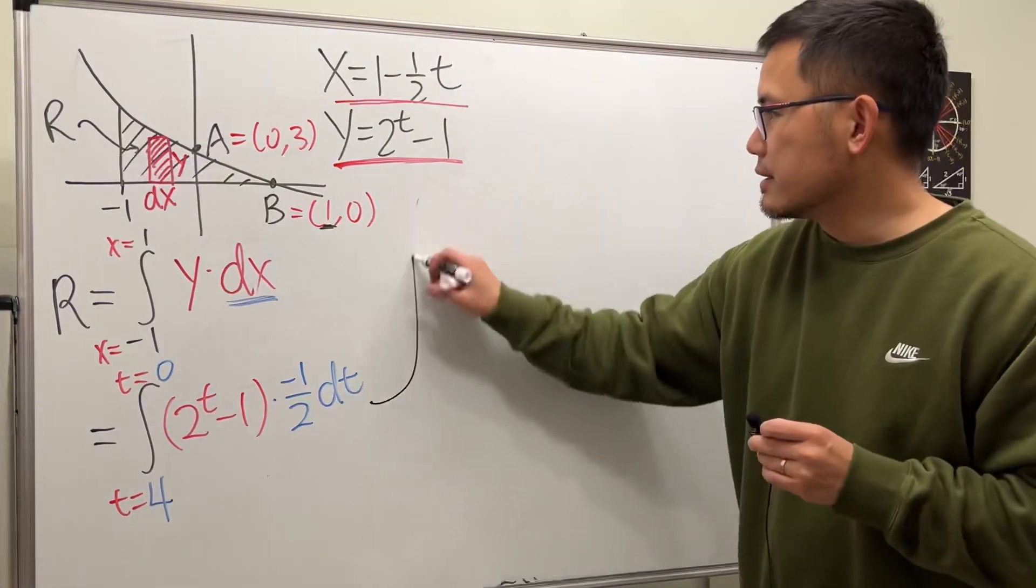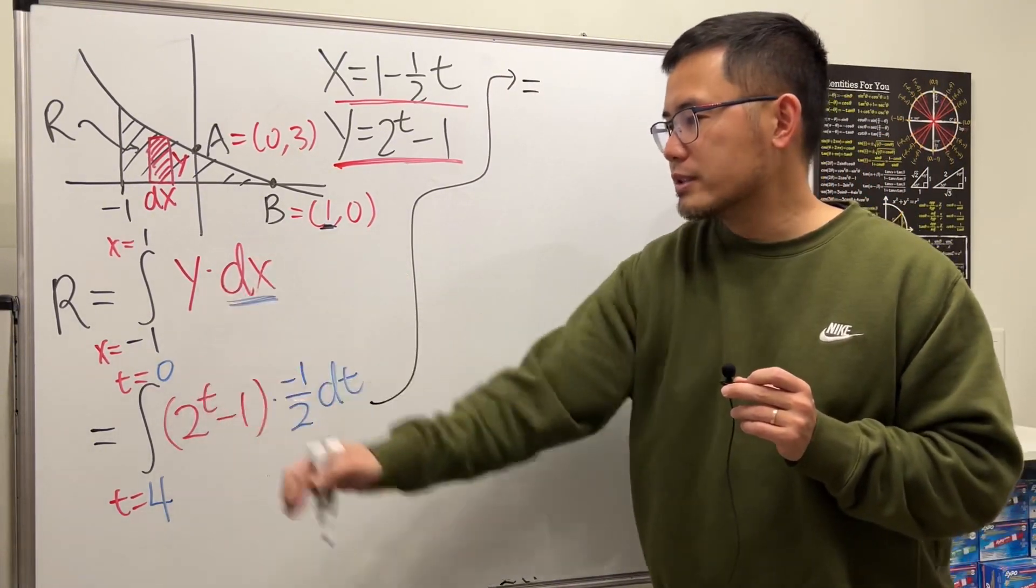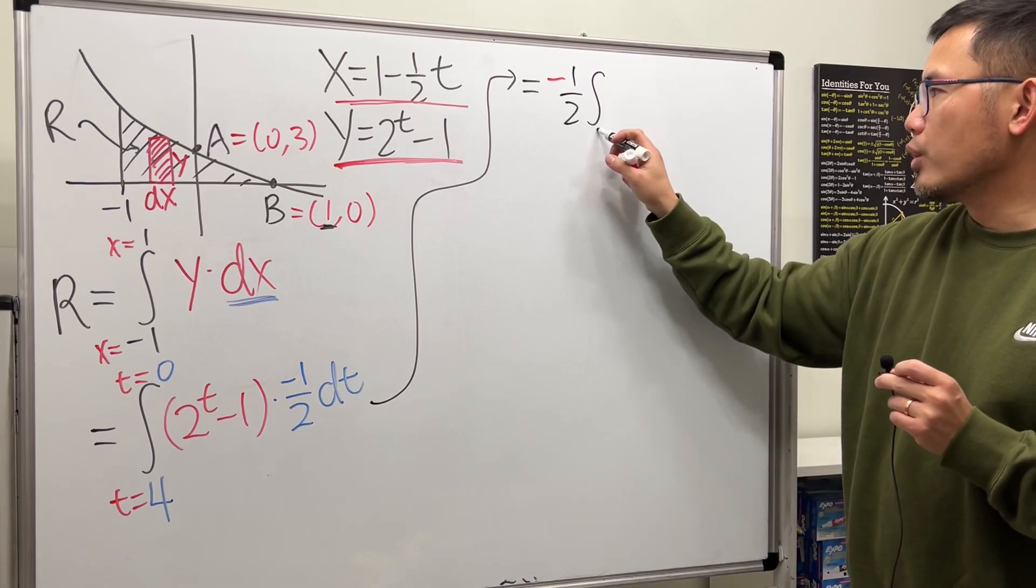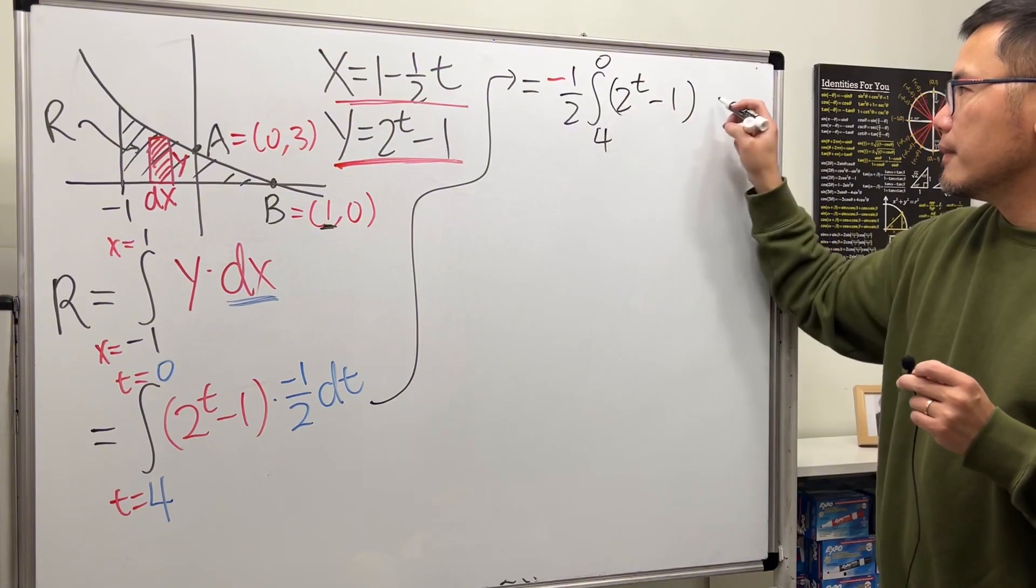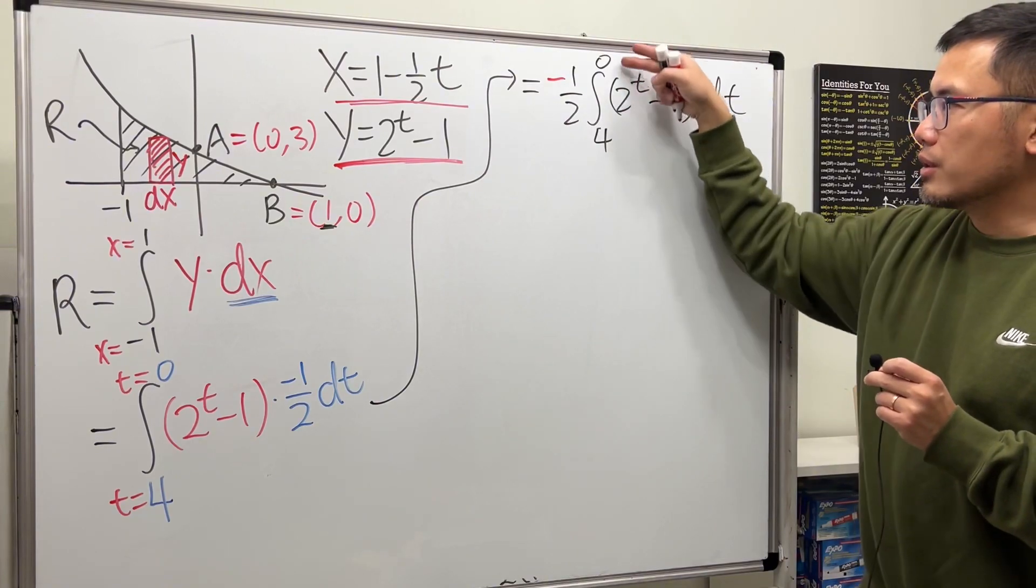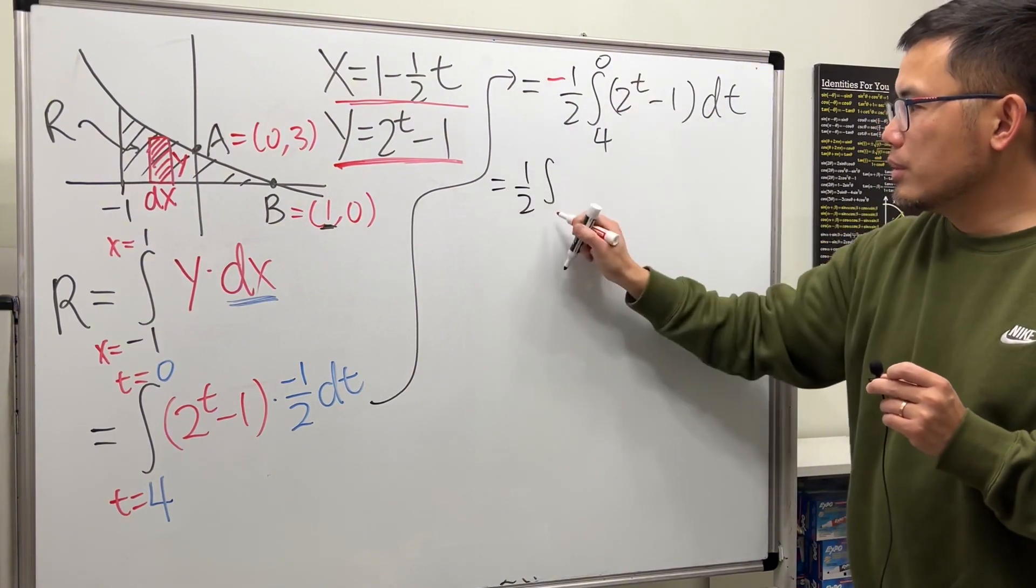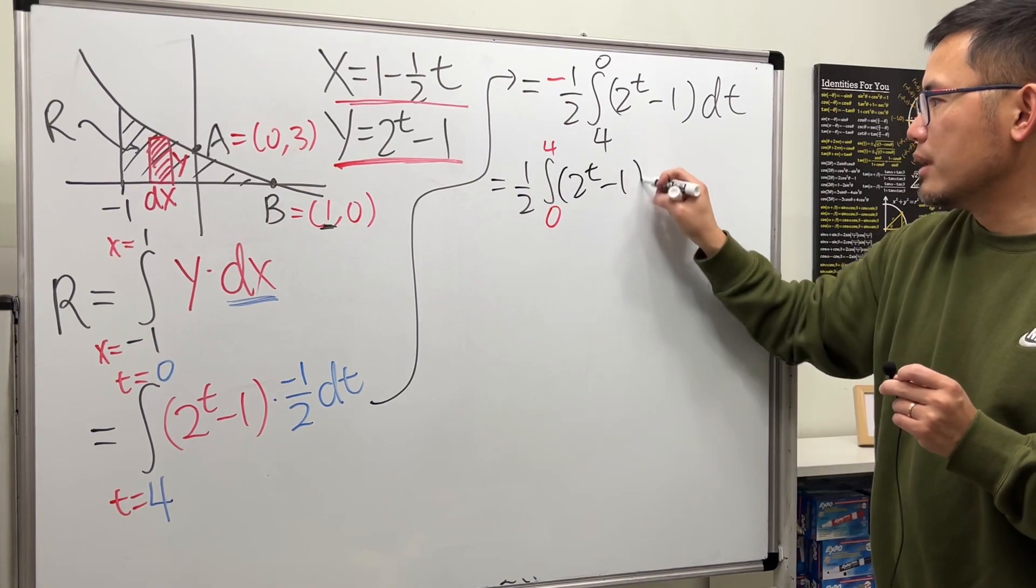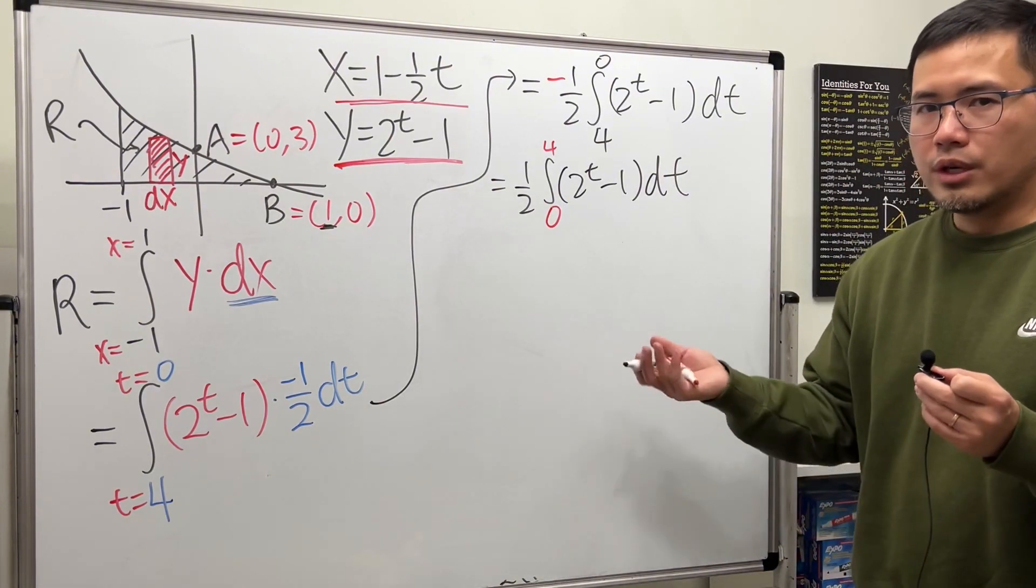Let me just write this down right here. This is equal to, let's put a -1/2 outside of the integral. So -1/2, and then right now we have the integral going from 4 to 0, and then 2^t - 1 dt. Thanks to this negative, we get to switch the limits of integration, so these two bounds. So we actually get positive 1/2 integral, 0 becomes right here, 4 goes right here, and then 2^t - 1. Thanks to one of the integral properties, so now we just have this integral. We can just work this out.